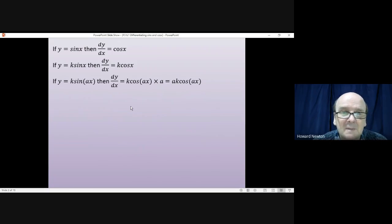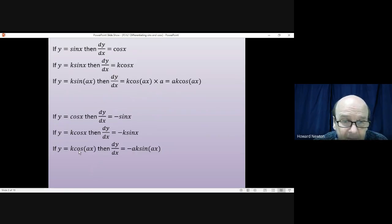Something very similar happens with cosine, except you get a minus. So the differential of cos x is minus sine x. If you have k times by cos x, then the differential is minus k times by sine x. And as with sine, if you've got the cosine of ax, when you differentiate it, first of all, you differentiate the cos to get minus sine. And then you'll have to multiply by the a when you differentiate ax. And that gives you minus ak sine ax.